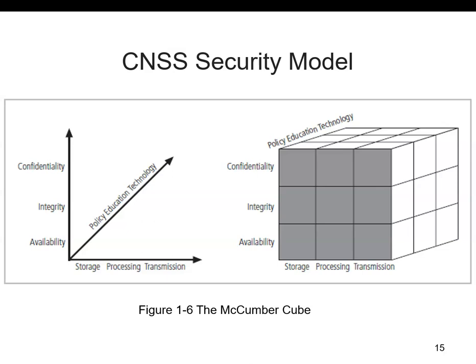This is called the CNSS security model, which illustrates the relationship of information storage, processing and transmission — the things we usually do with data. That forms the X axis, with the key objectives of the CIA: confidentiality, integrity and availability. Other characteristics apply along the Y axis, and the three primary means to implement security — policy, education and technology — form the Z axis. This model has been created and suggested as a framework to follow.